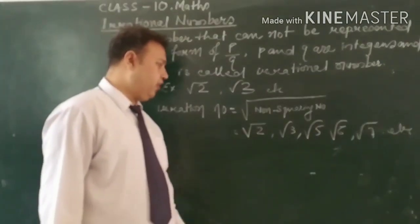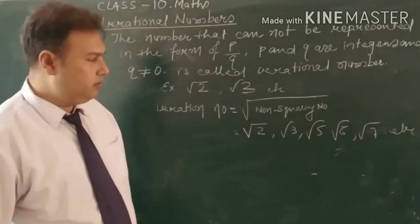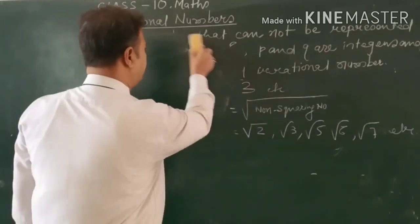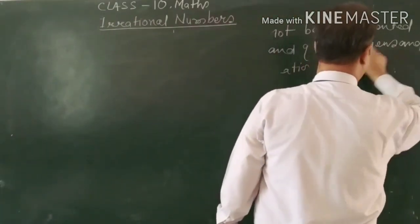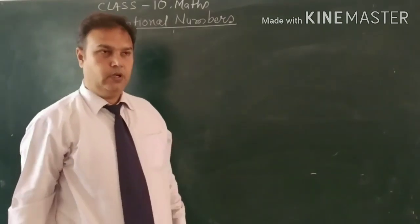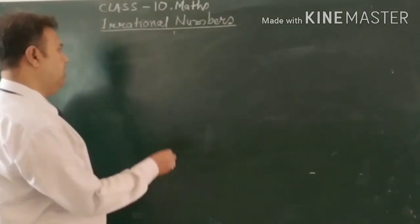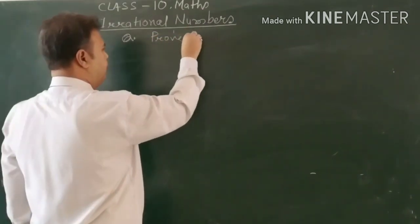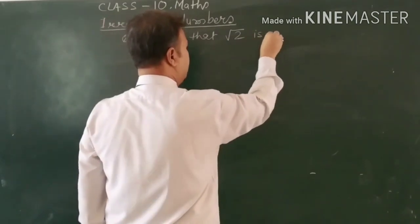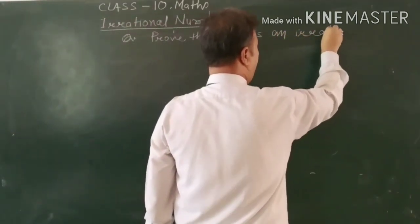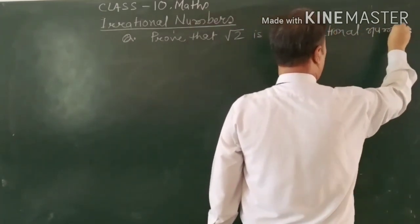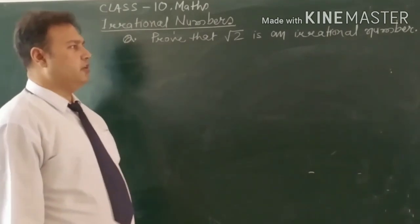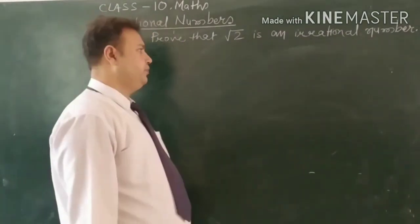Now how we can prove the root — it is very simple, I will show you. Now how we can prove root 2 is an irrational number. We generally ask it in this way: prove that root 2 is an irrational number. Sometimes we write it in another form: prove that root 2 is not a rational number — same thing. Solve.